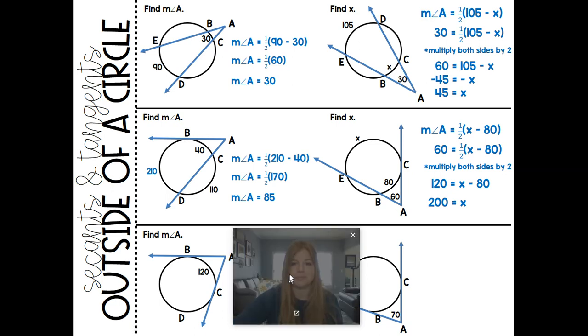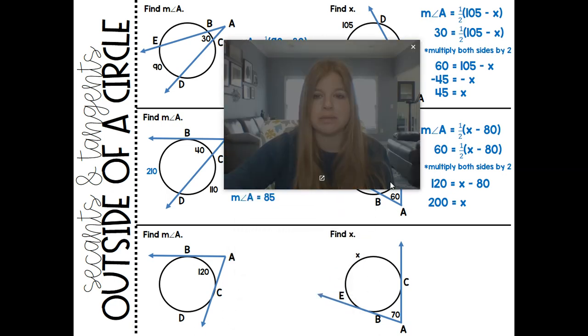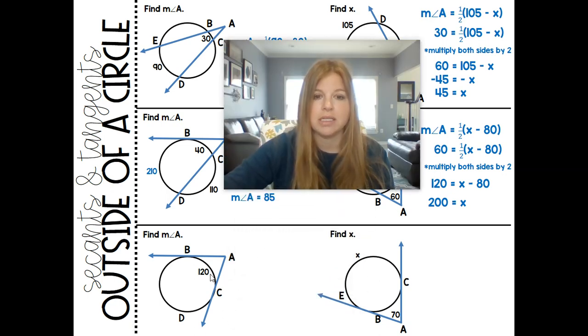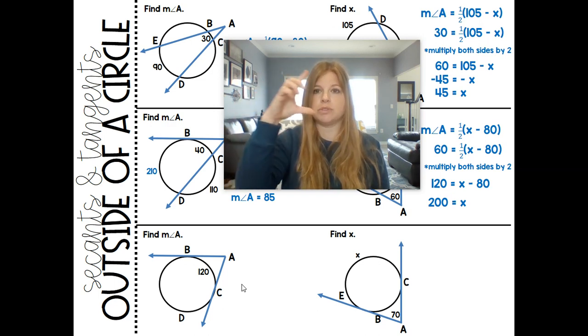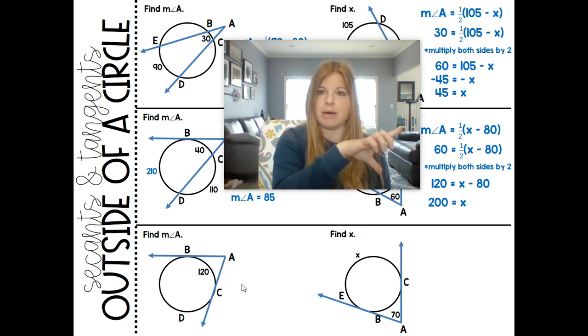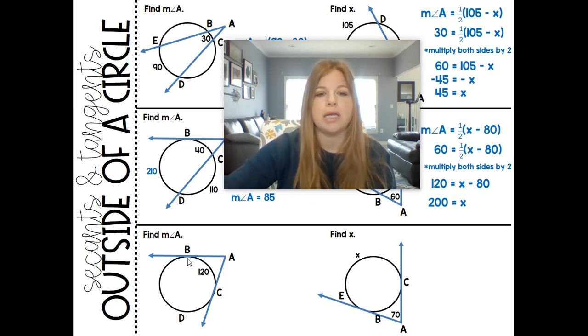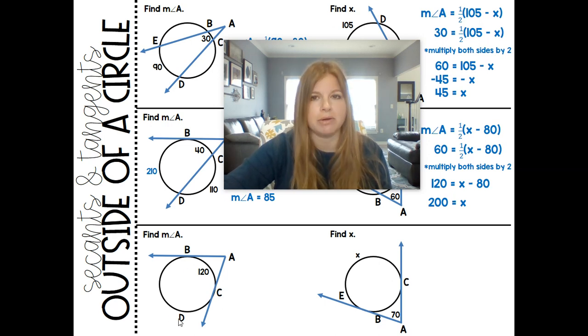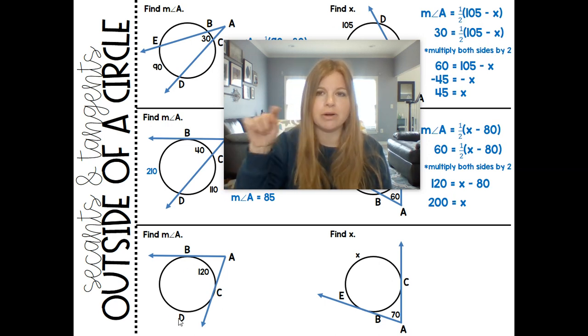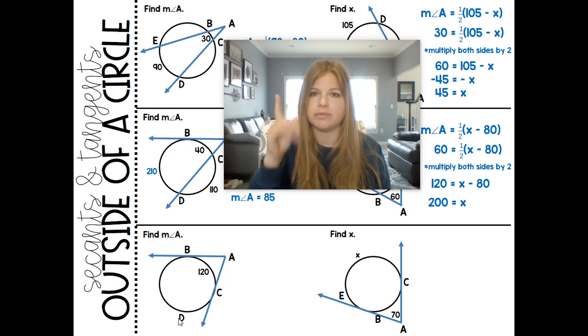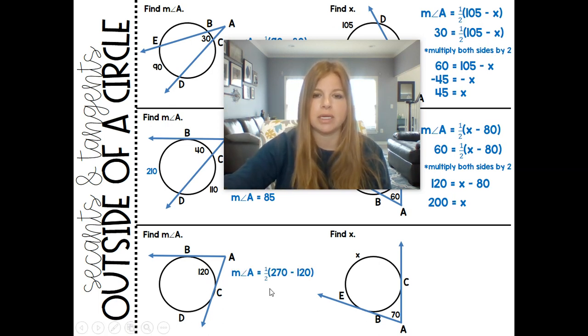All right, bottom two, two tangents. So same thing. That angle A is equal to one half times the outer arc minus the inner arc. Here I'm told just my inner arc. So if I know just the inner arc for a tangent, we know this outer arc because the inner arc and the outer arc are going to add up to 360 when you have two tangents. So if this is 120, then this outer arc is 360 minus 120, which is 240.